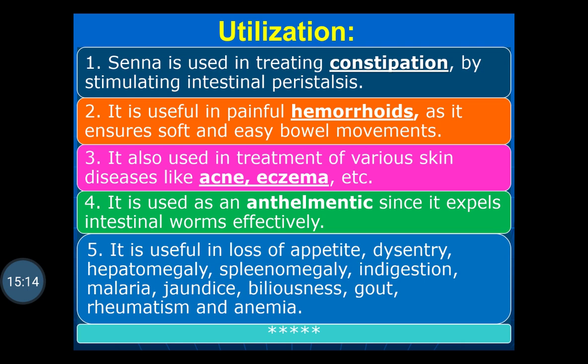This is all about the sennosides, which are obtained from the Senna leaflets — that is, Cassia acutifolia and Cassia angustifolia — belonging to family Leguminosae. The sennosides are Sennoside A, Sennoside B, Sennoside C and Sennoside D, which are separated as calcium sennosides. Thank you very much.